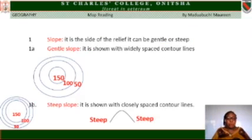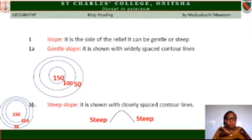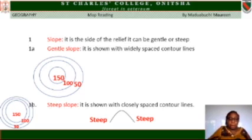The slope is the side of the relief — it can be gentle or steep. A gentle slope is shown with widely spaced contour lines, as you can see from the diagram where the lines are widely spaced. A steep slope is shown with closely spaced contour lines, where the contour lines are close together. Looking at the real picture of a steep slope, it is sharp — this is the highland. So it is sharp.